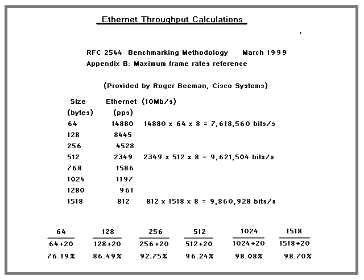If we look at 512-byte frames, you can only get 2,349 frames per second in a 10 megabit pipe. That gives you about 96 percent efficiency, or 9.6 megabits per second.